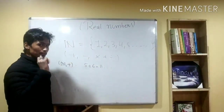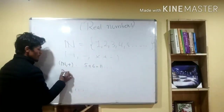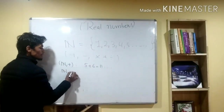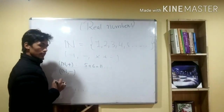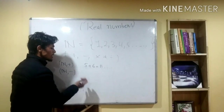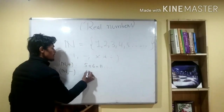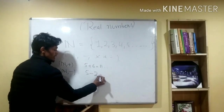Now, let's consider the natural number with minus. So, let's consider the minus operation. Suppose we take 5 minus 2.